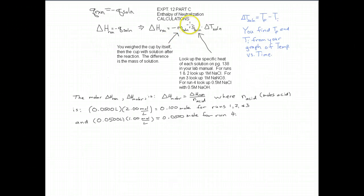Remember, three places past the decimal. You're going to look up the specific heat of the solution on page 138 in your lab manual. This should be in your table of constants. For runs one and two, that'll be the specific heat of a one molar sodium chloride solution. For run three, it'll be the specific heat of a one molar sodium nitrate solution. And for run four, it'll be the specific heat of a mixture of 0.5 molar sodium chloride and 0.5 molar sodium hydroxide solution. Those numbers are all on page 138.